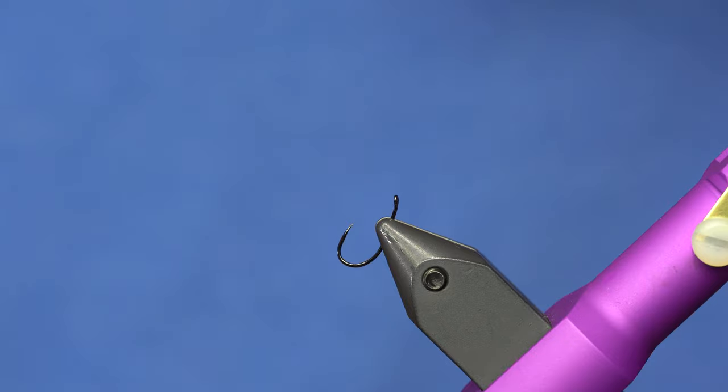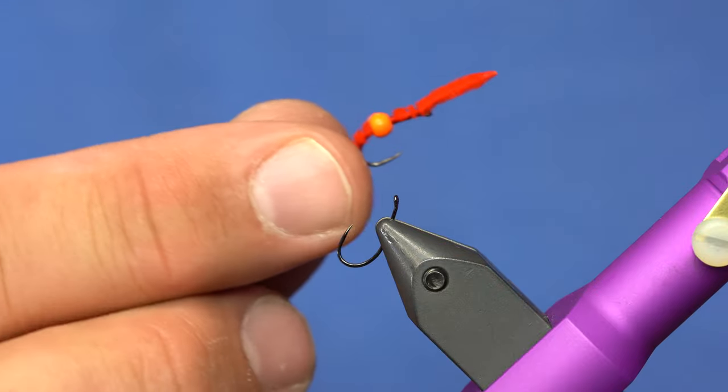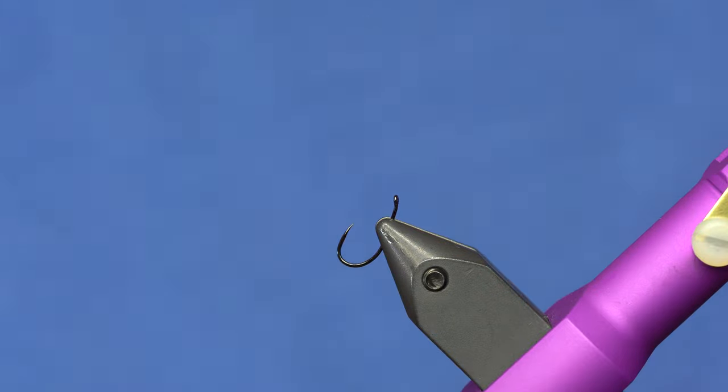All right, so this is a real easy fly. We're just going to tie a little San Juan Worm variation. It's kind of a dumb pattern, but you should have it in your box. It's just a San Juan Worm with a bead strung through the middle.